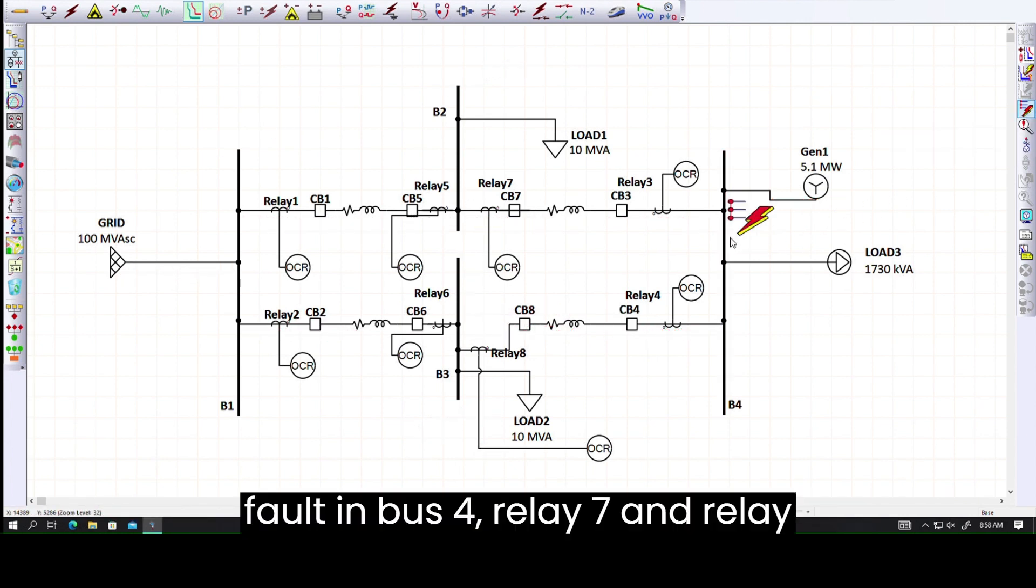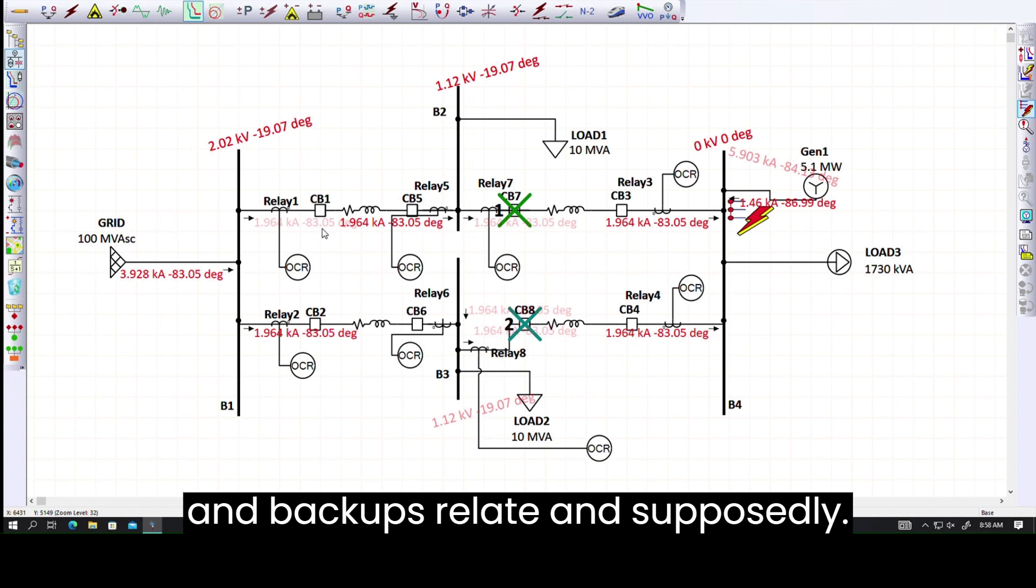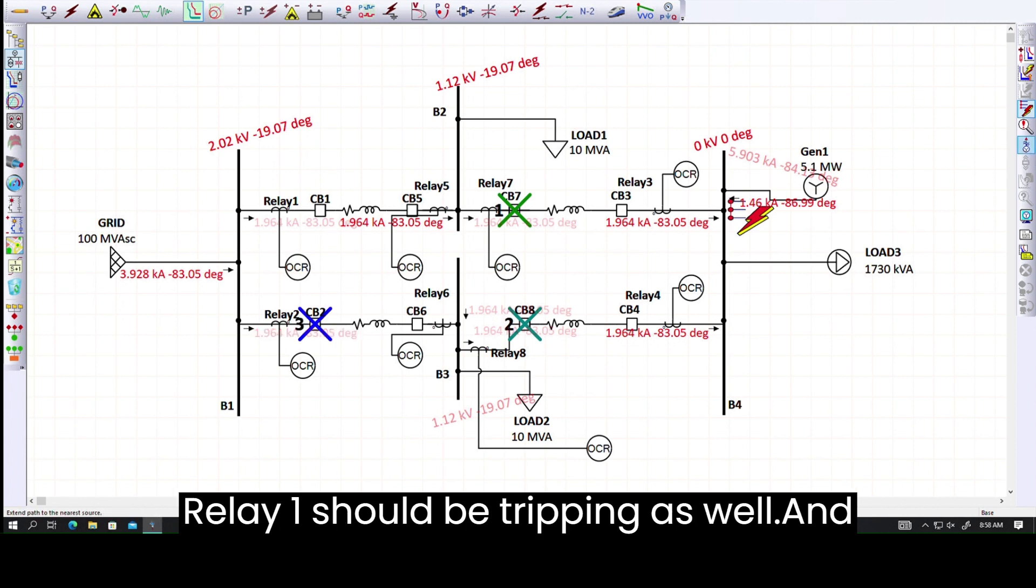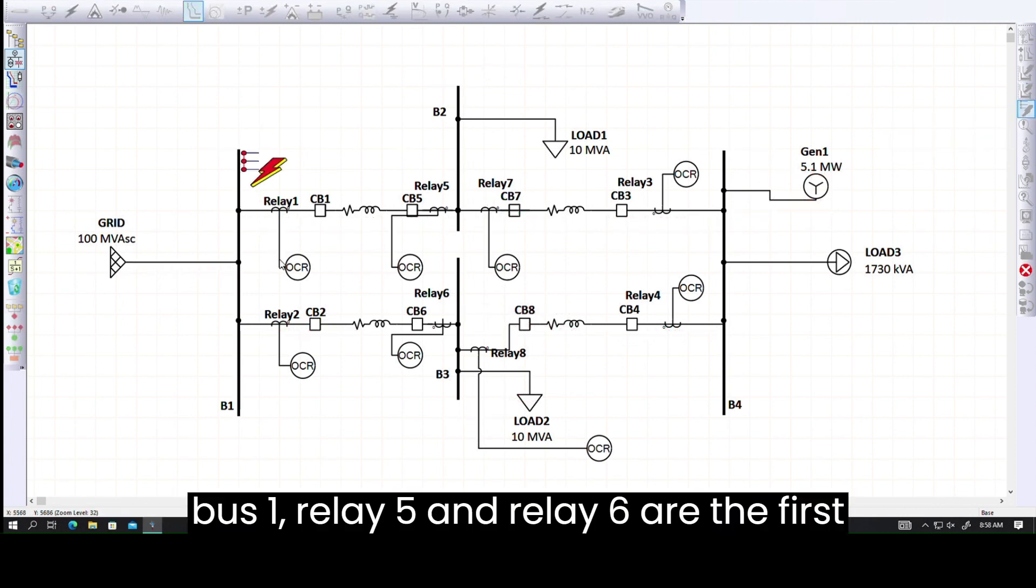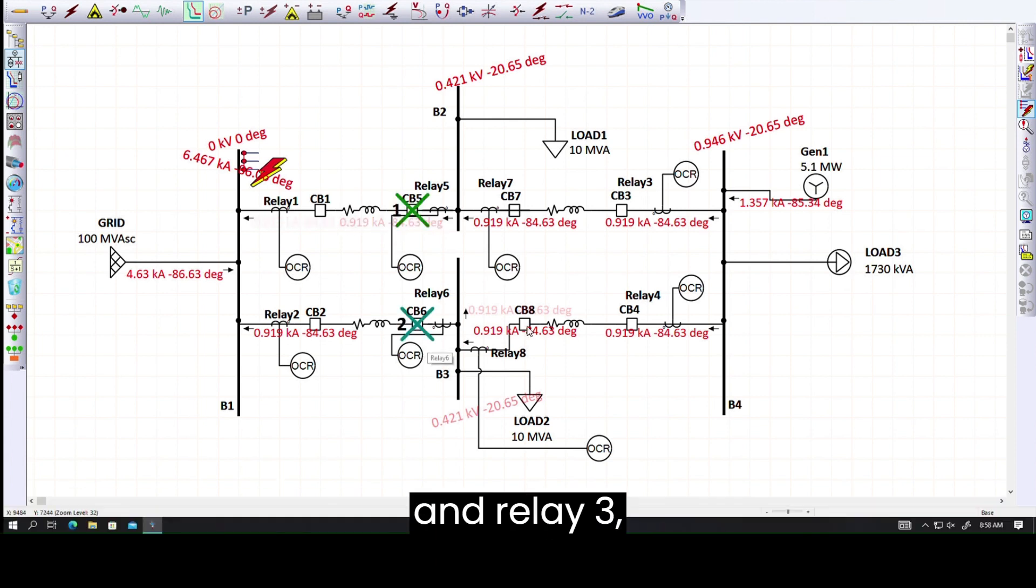Now if I put a fault in bus 4, relay 7 and relay 8 are going to be the first ones to trip, and backup relays 2 and supposedly relay 1 should be tripping as well. If I put a fault in bus 1, relay 5 and relay 6 are the first ones to trip, and backup relays 3 and 4 should be tripping as well.